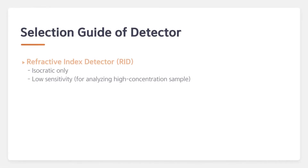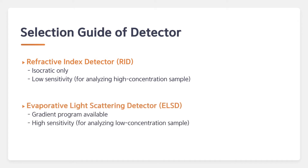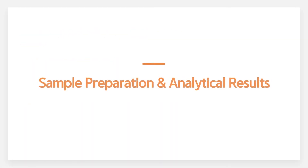RID is suitable for analyzing high concentration samples and is only used in isocratic mode. However, ELSD is suitable for analyzing low concentration samples and is available for gradient program mode.